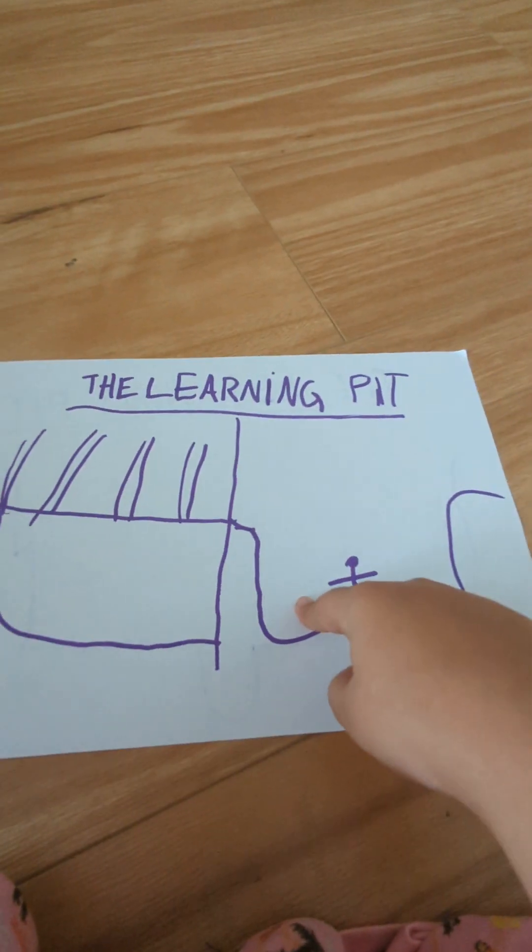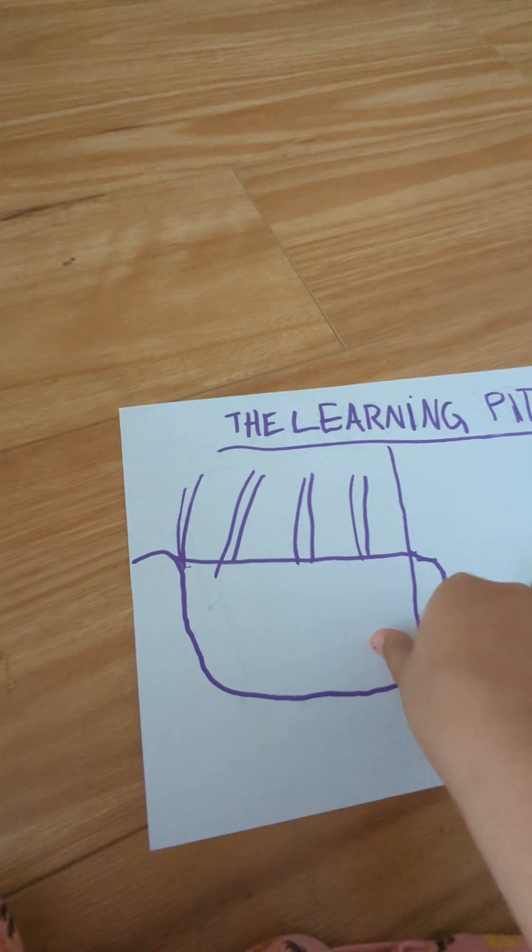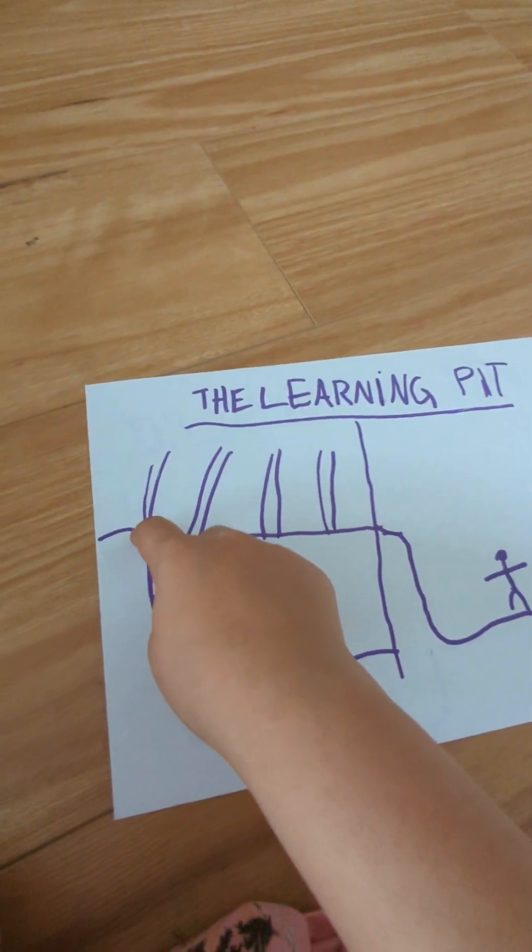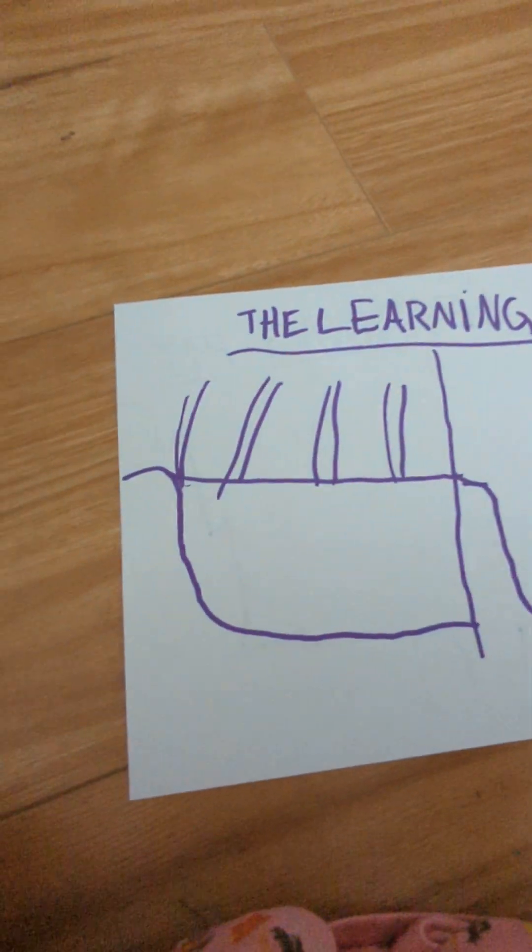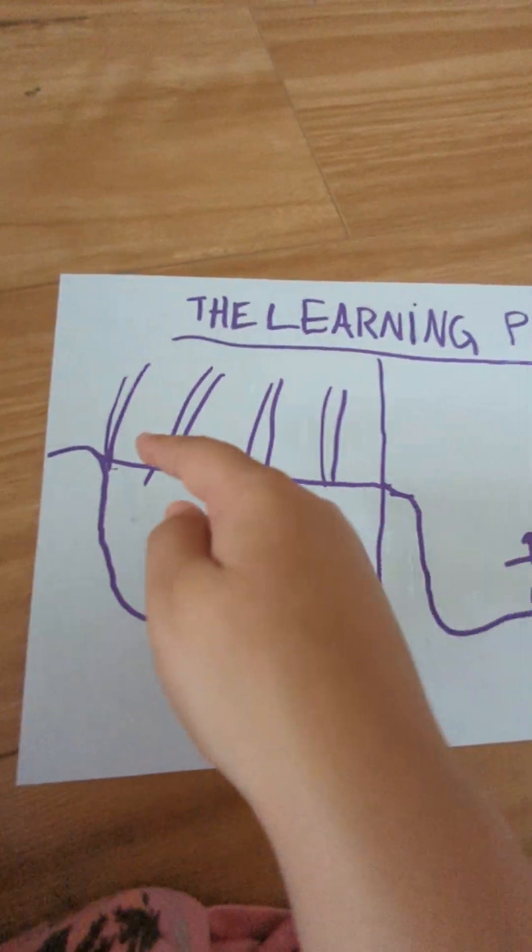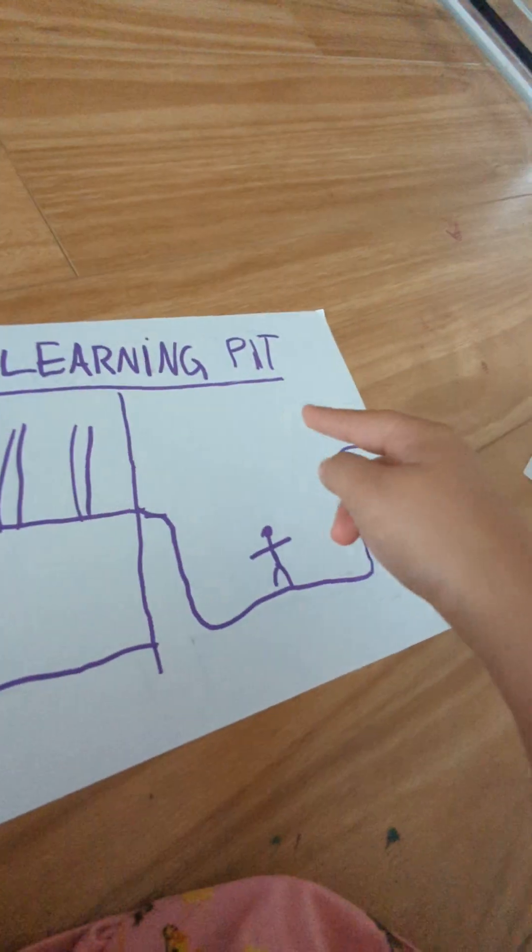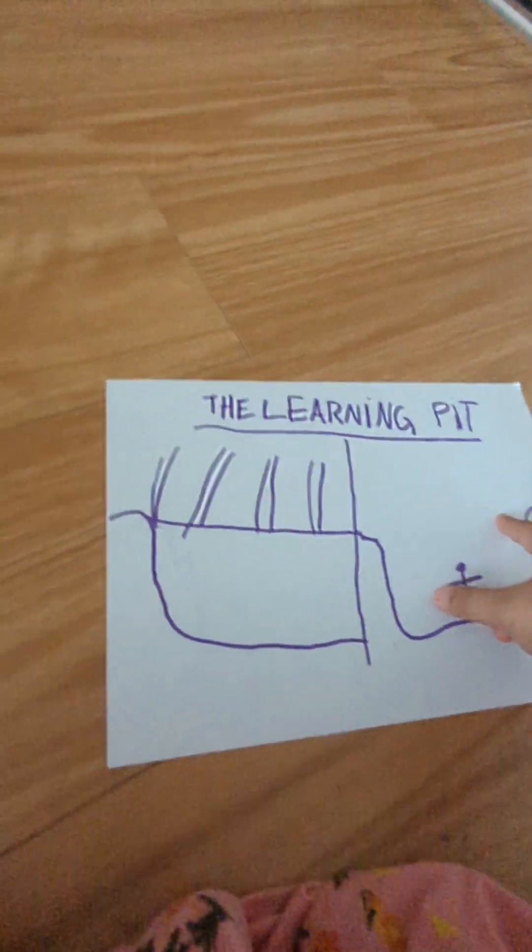It all starts from here, but you can't build a bridge because that would mean you're not learning. That's the rules of the learning pit - you can't build a bridge to the other side because that would mean you're not learning.